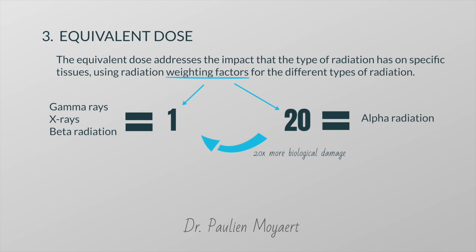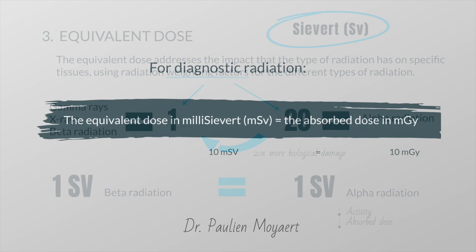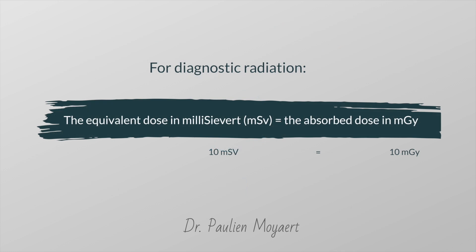The equivalent dose is expressed in a measure called the Sievert. An equivalent dose of 1 Sievert of alpha radiation will have the same biological effects as 1 Sievert of beta radiation, but the activity and the absorbed dose will be much lower for alpha radiation. One important note: because all radiation used in diagnostic medicine has the same low harm potential, the absorbed dose and the equivalent dose are the same — only the units are different.